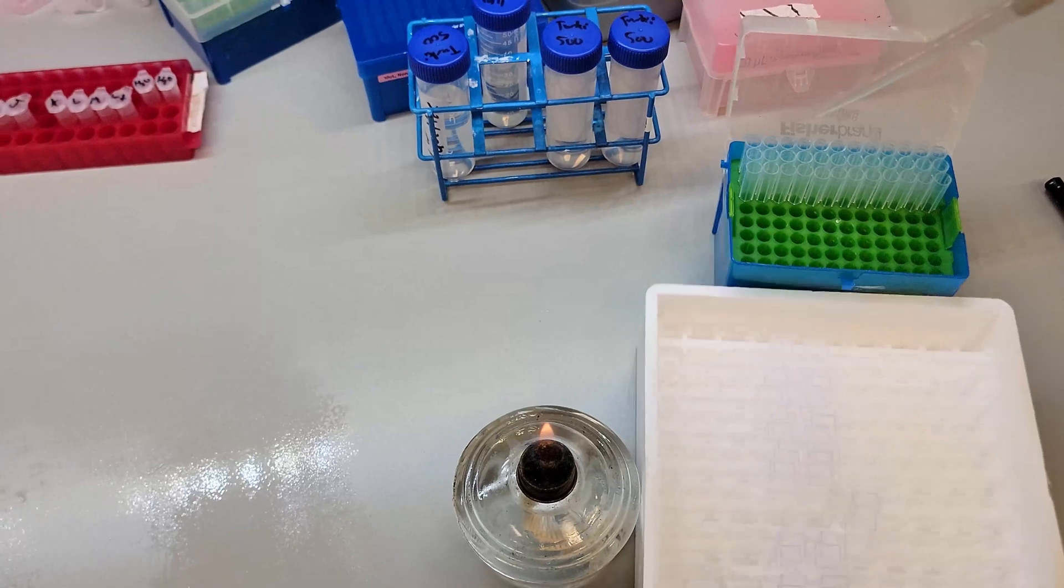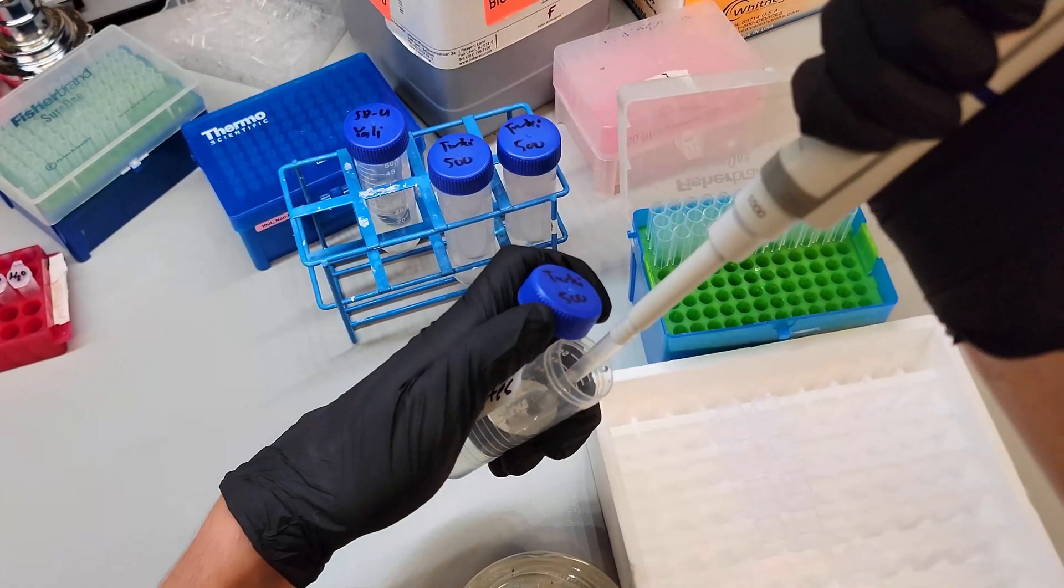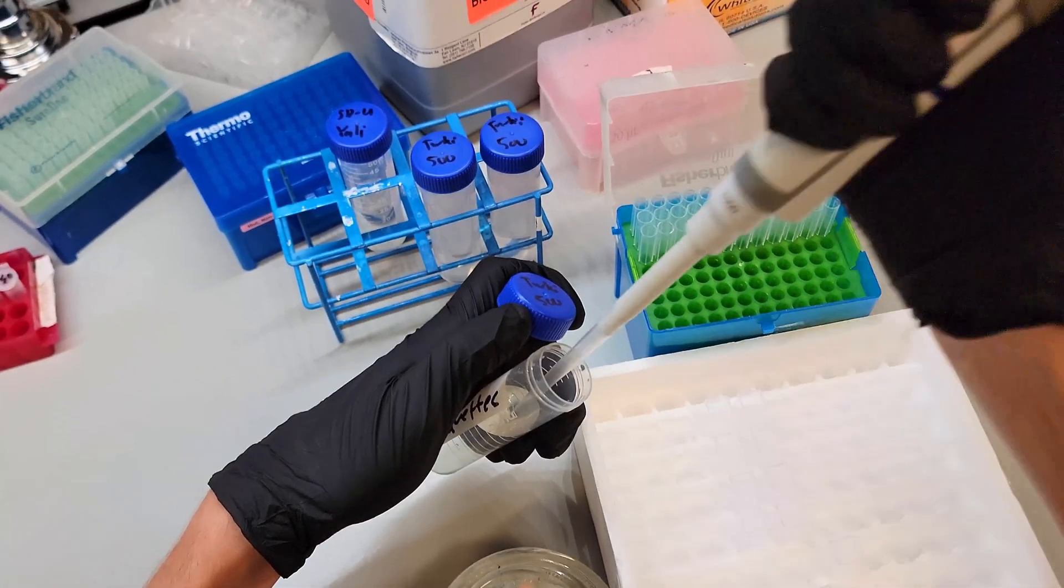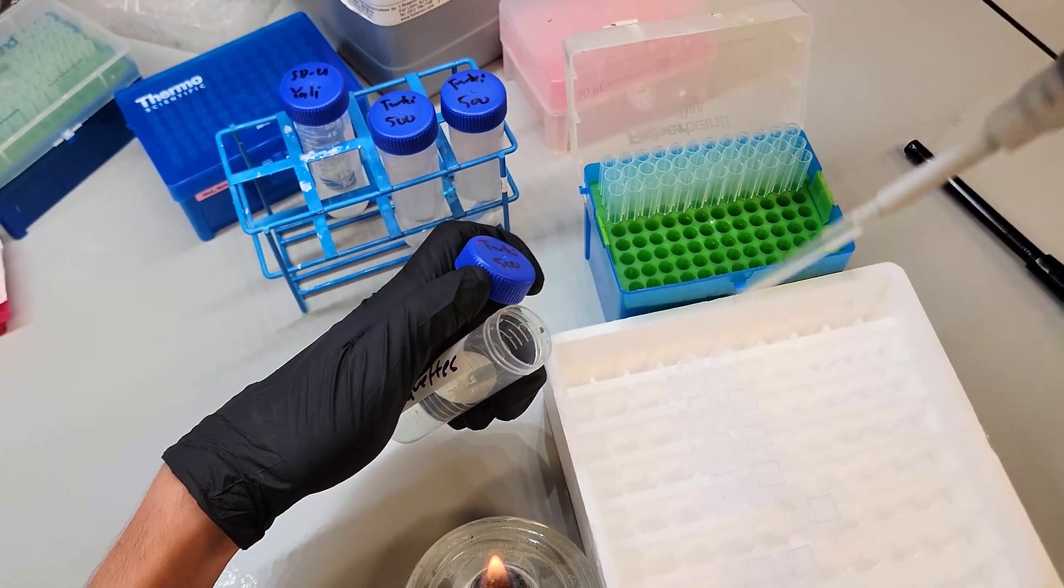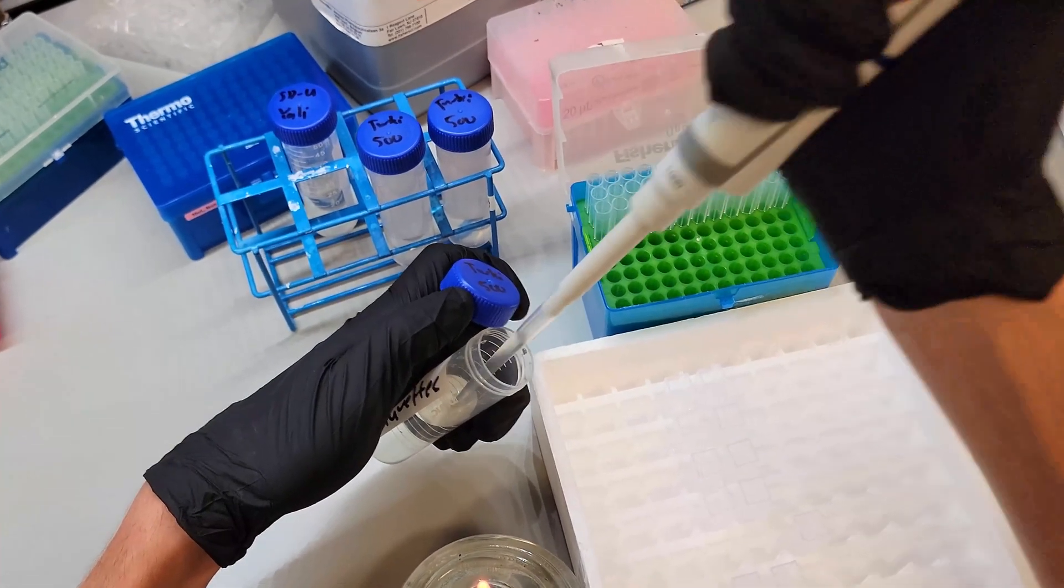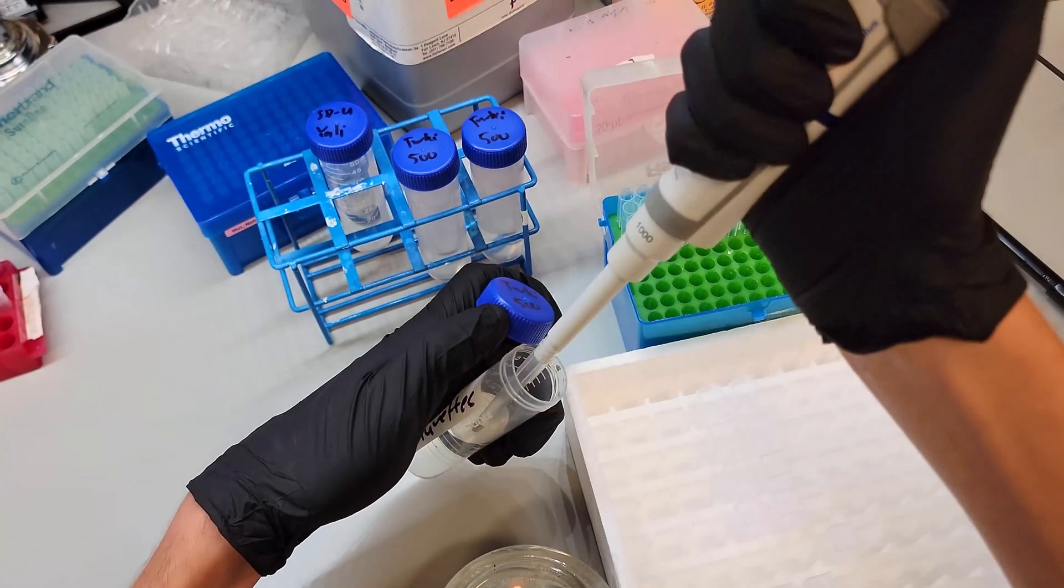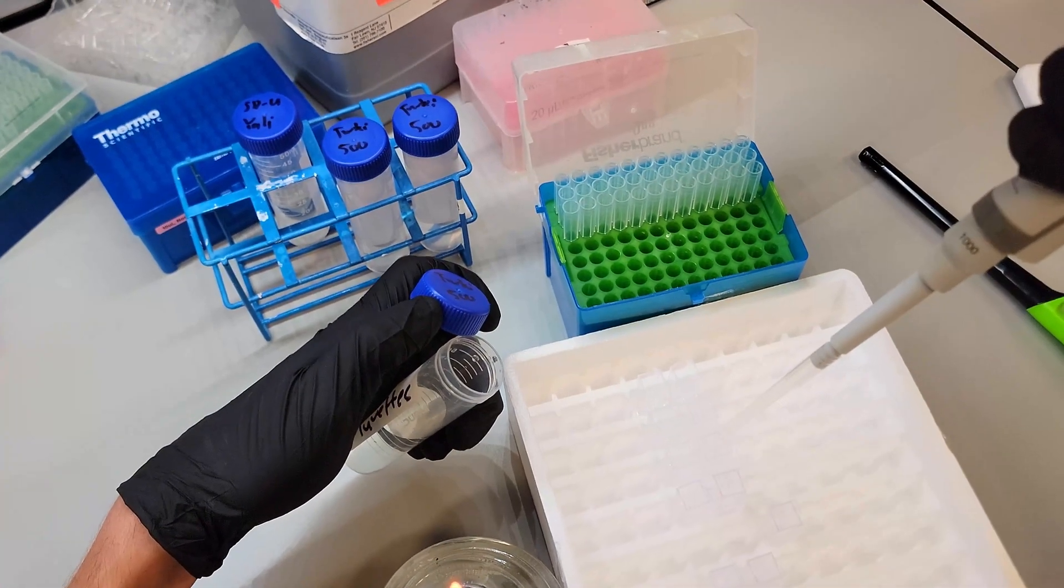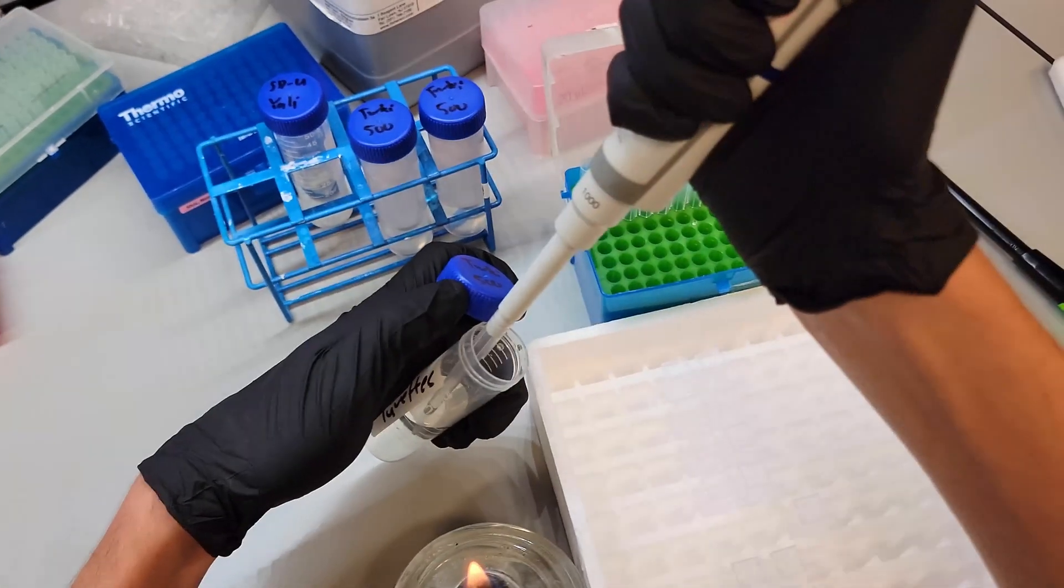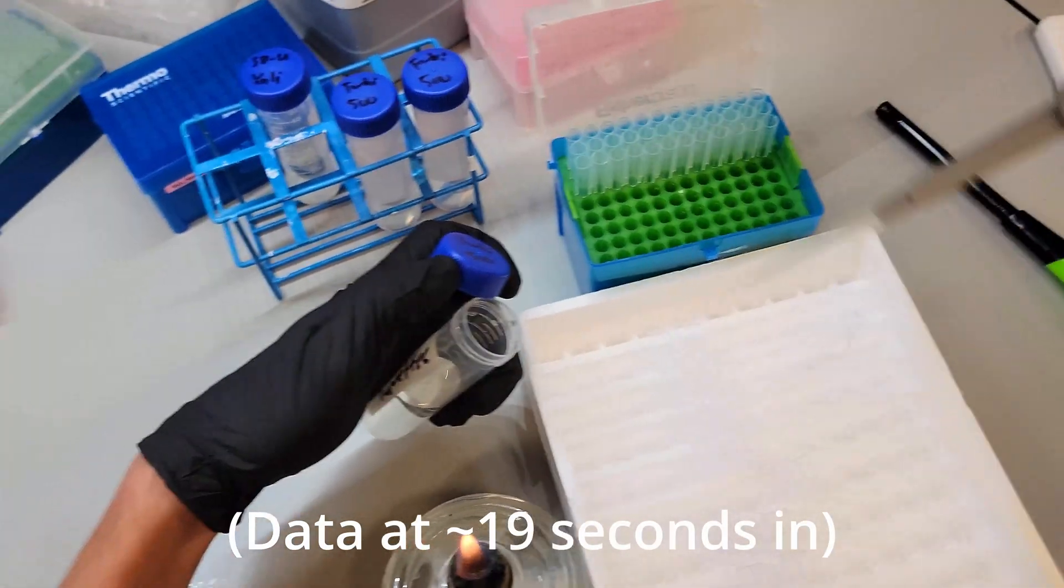So the idea is you just measure the flask every however many hours. Usually it's normal to measure at least once every doubling time. These cultures should double every six to eight hours on average. Some variation is fine, but you want to have maybe like 10 data points within a growth curve. I'll put a growth curve up on the screen and maybe even my data from this experiment as well.